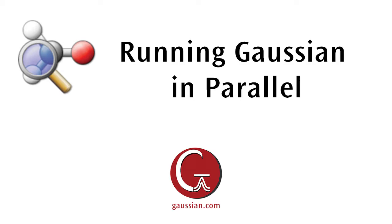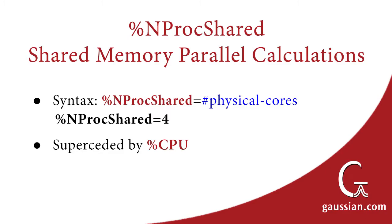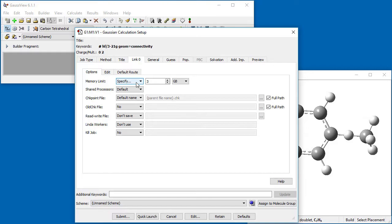Calculations can often be completed more quickly by using more than one processor or core. Windows versions of Gaussian include shared memory parallel capabilities as part of their standard features, with the exception of 32-bit G16W, which is limited to one core. Consult the G16 documentation for a list of job types that can be run in parallel. The %NprocShared Link0 command specifies the number of processors or cores to use for the calculation. The default is 1.